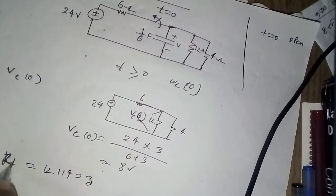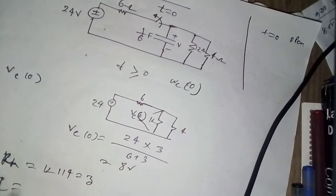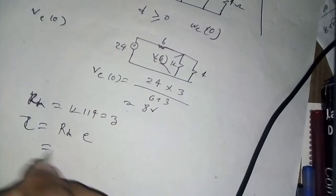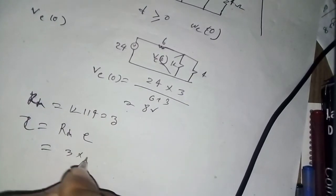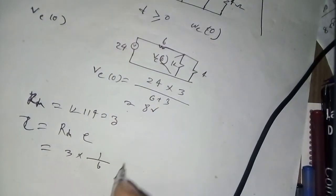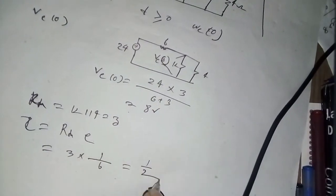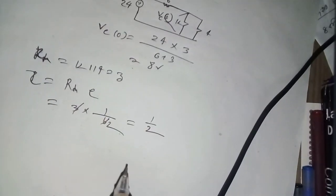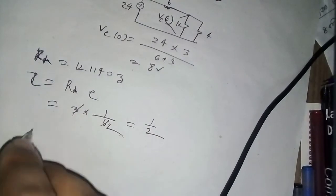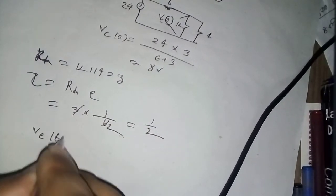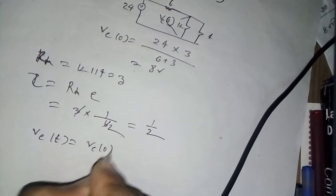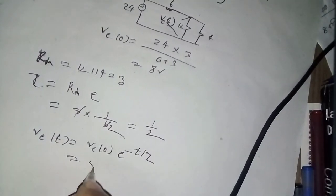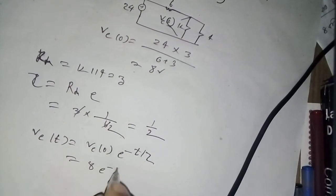Now we find R equivalent. The voltage across the capacitor is Vc(t) equals Vc(0) times e to the power minus t by tau, which is 8 e to the power minus t by tau.